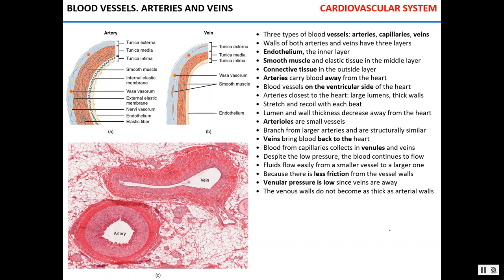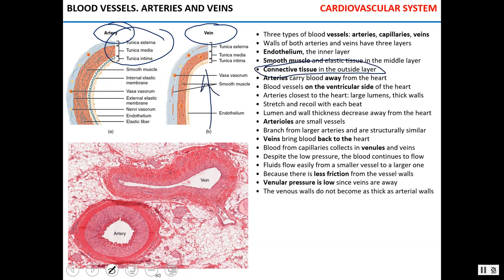Let's talk about types of blood vessels. There are three types: arteries, veins, and capillaries. Arteries and veins have three layers: tunica externa, tunica media, and tunica intima. Tunica externa is connective tissue, tunica intima is the layer of endothelial cells, and tunica media is the layer of smooth muscle.